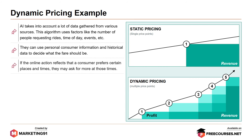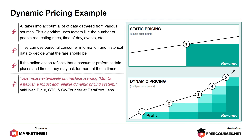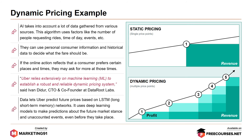If online activity reflects that a consumer prefers certain places and times, they may be charged more at those times. Uber relies extensively on machine learning to establish a robust and reliable dynamic pricing system, as stated by the CTO and co-founder at Data Root Labs. With machine learning, Uber generates a future-aware forecast of multiple market conditions using a system sensitive to external factors — including global news events, weather, historical data, holidays, time, and traffic. Data lets Uber predict future prices based on long short-term memory networks, using deep learning models to make predictions about future market stance and unaccounted events before they take place.